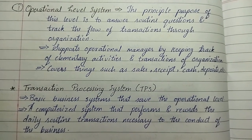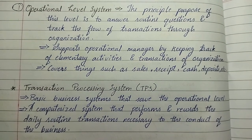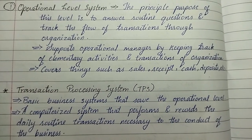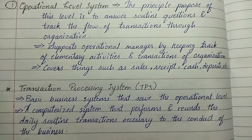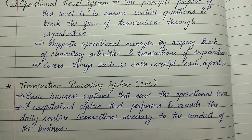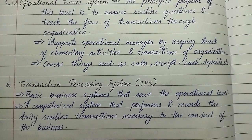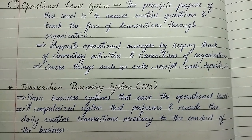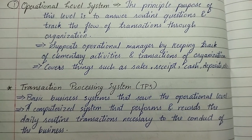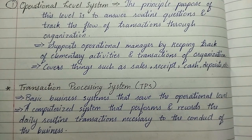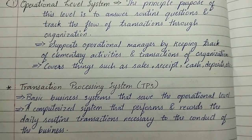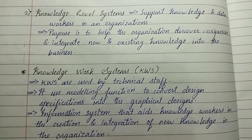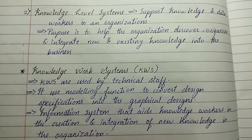The Transaction Processing System (TPS) is a basic business system that serves the operational level. It is a computerized system that performs and records the daily routine transactions necessary to the conduct of the business.